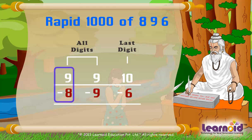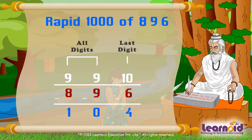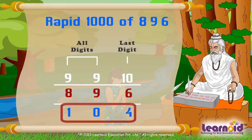9 minus 8 is 1, 9 minus 9 is 0, and 10 minus 6 is 4. So after applying Nikhilam Sutra, we got rapid 1000 of 896 as 104.